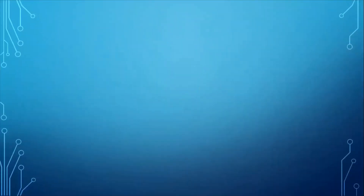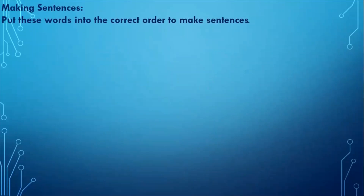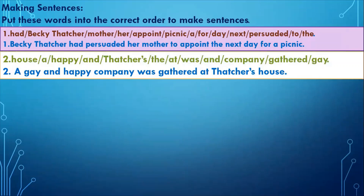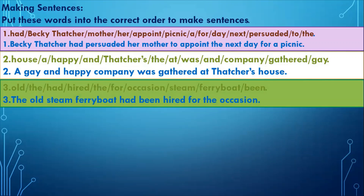Moving to the next slide: put these words into the correct order to make sentences. First: 'Becky Thatcher had persuaded her mother to appoint the next day for a picnic.' Second: 'A gay and happy company was gathered at Thatcher's house.'